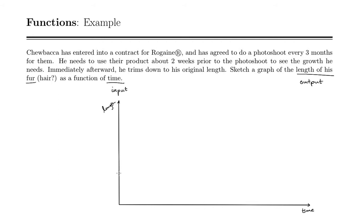At time zero, he certainly has a certain length of hair, so we can start right there somewhere. As time goes on, his hair or fur will grow slowly. He's going to be having a photoshoot after three months, so we're going to go ahead and mark three months, six months, and nine months on the time axis.